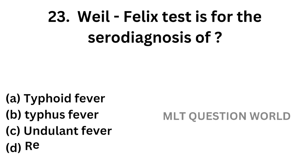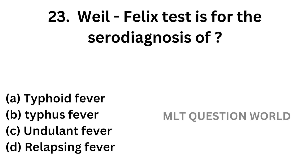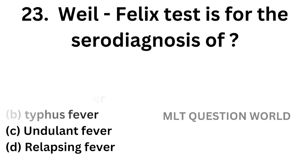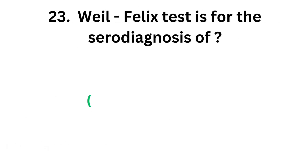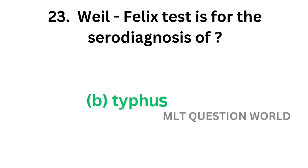Question number 23. Weil-Felix test is for the serodiagnosis of: Option A, typhoid fever; Option B, typhus fever; Option C, undulant fever; Option D, relapsing fever. The correct answer is Option B, typhus fever. Weil-Felix test is done for the serodiagnosis of typhus fever.